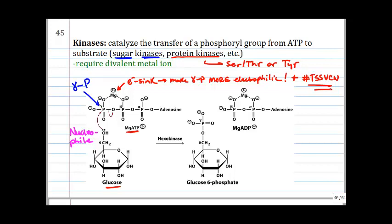Back to the whole point of why we only get phosphorylation at the 6' position: it is only the 6' OH group that can attack ATP. The 6' OH group is the only one that is in position to attack the gamma phosphoryl group — the gamma phosphorus atom of the gamma phosphoryl group of ATP. This is why we get this very, very specific phosphorylation.